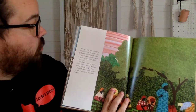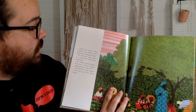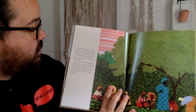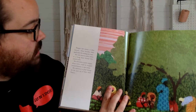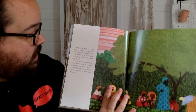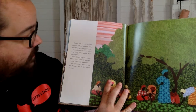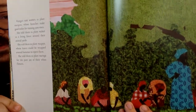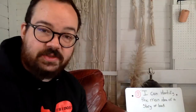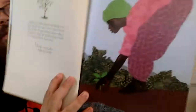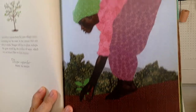Wangari told women to plant Mungano — those branches make good stakes for trading yam vines. She told them to plant Muthuli as a living fence around their animal yards. She told them to plant Mugoya, whose leaves could be wrapped around bananas to ripen them. She told them to plant Morgana for the pure joy of their white flowers. All of these different plants and trees that Wangari is telling these people to plant — these women — it's amazing. Look at this artwork, it is so gorgeous.